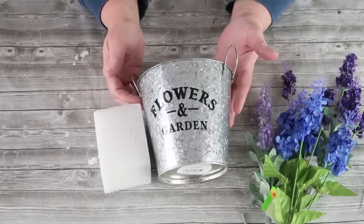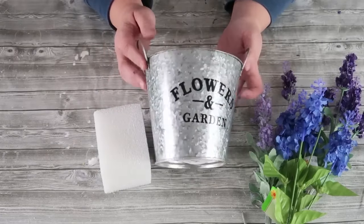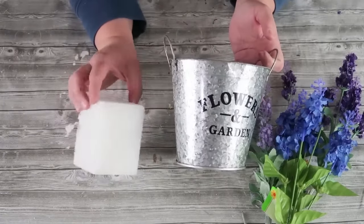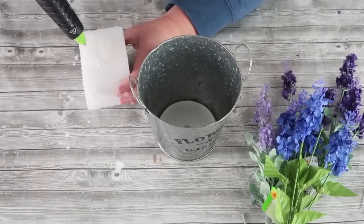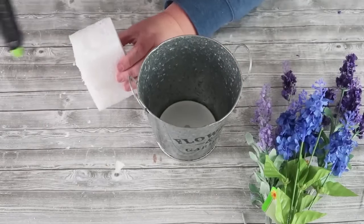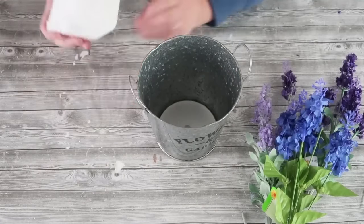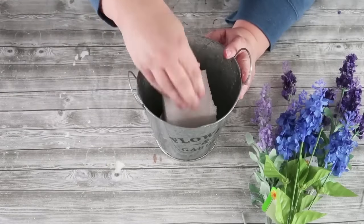We are going to take this flower garden bucket as well as some of these florals and a piece of foam core and some black and white gingham ribbon. Go ahead and take your foam piece and put in some E6000 and some hot glue and pop that right down into your pot.